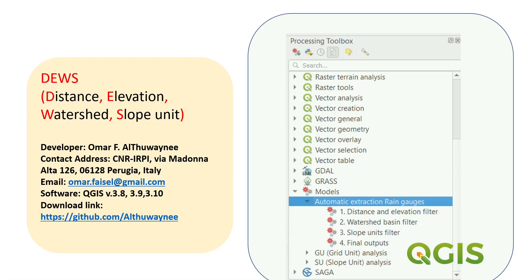Once a landslide happens and we start work on developing the threshold, we look for information about the rainfall event that occurred at the same time as the failure. This information can be retrieved from the related rainfall gauge. In the DEWS model, we select stations based not only on distance, but also on elevation, watershed, and slope unit.